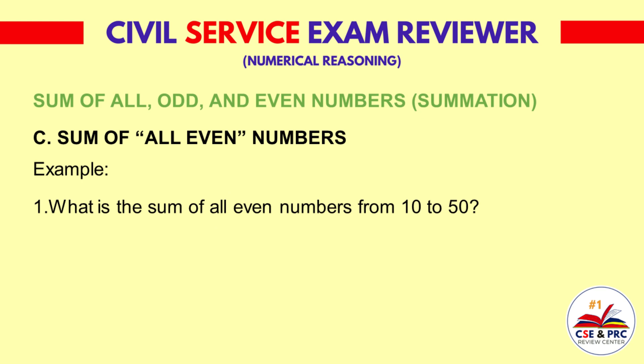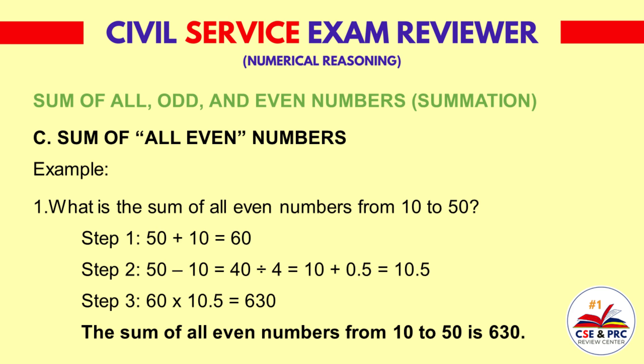Example 1: What is the sum of all even numbers from 10 to 50? Step 1: Add the biggest even number and the smallest even number — 50 plus 10 is equal to 60. Step 2: Subtract the biggest even number from the smallest even number, divide by 4, then add 0.5 — 50 minus 10 equals 40, divided by 4 equals 10, plus 0.5 equals 10.5. Step 3: 60 times 10.5 is equal to 630. The sum of all even numbers from 10 to 50 is 630.